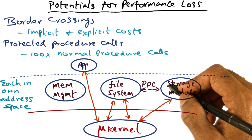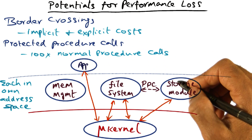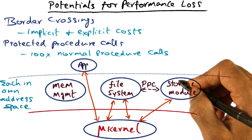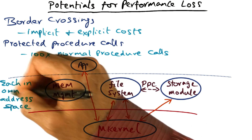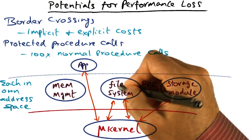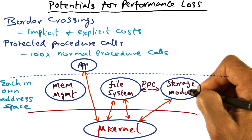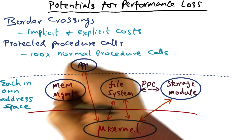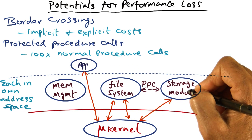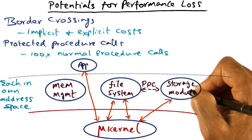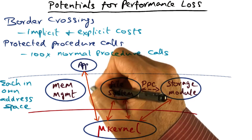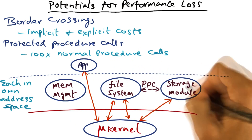Protected procedure calls can be as expensive as 100 times normal procedure calls. This is because each of these services in a microkernel based design is assumed to be implemented in its own address space to protect the integrity of each of these system services.